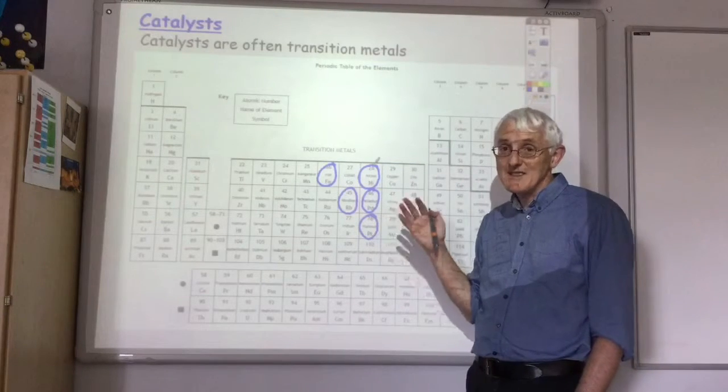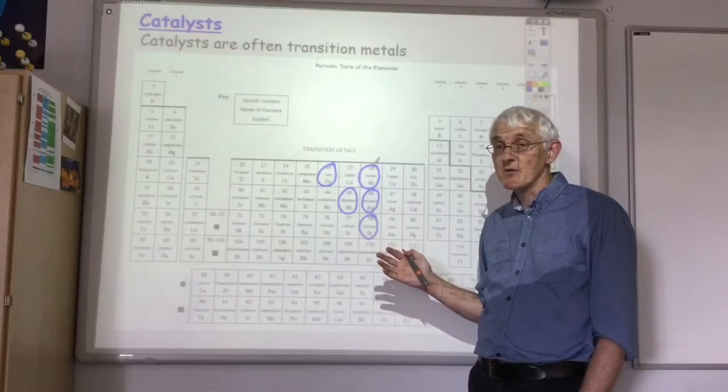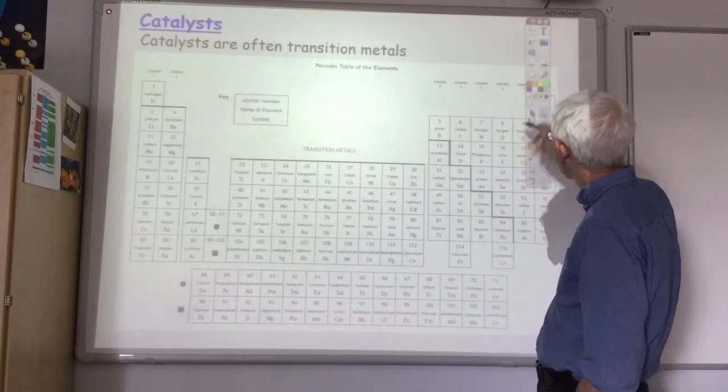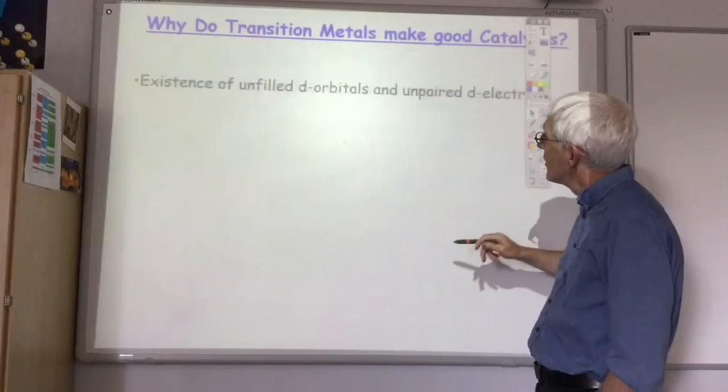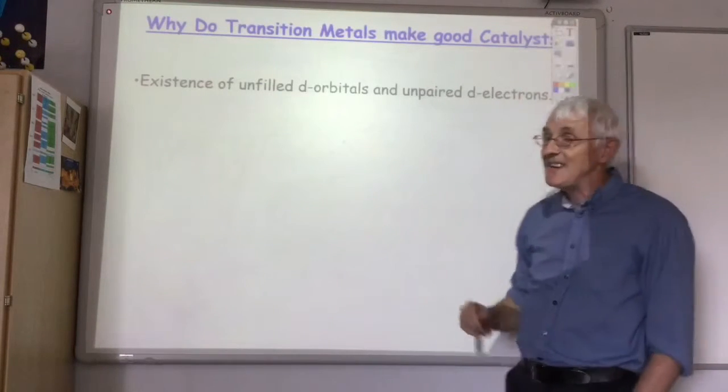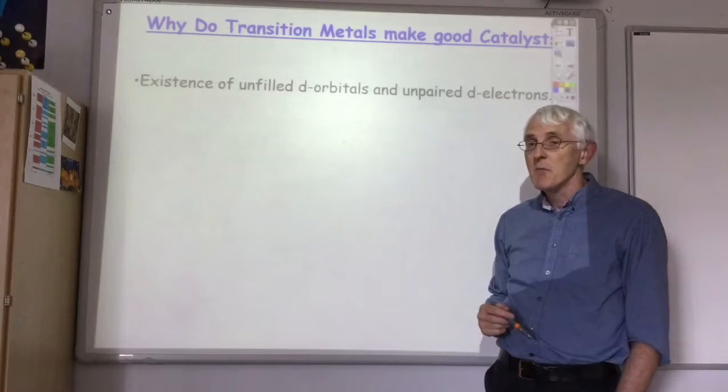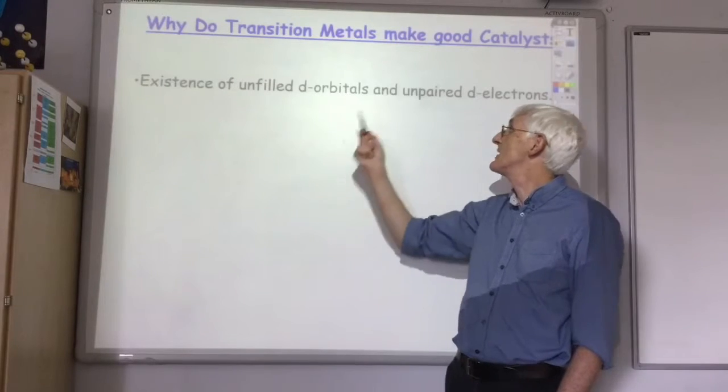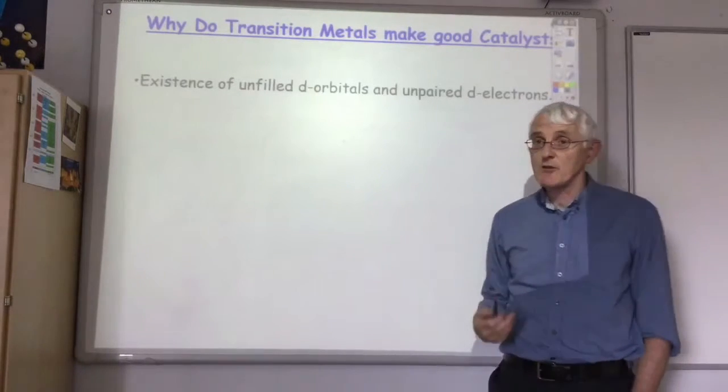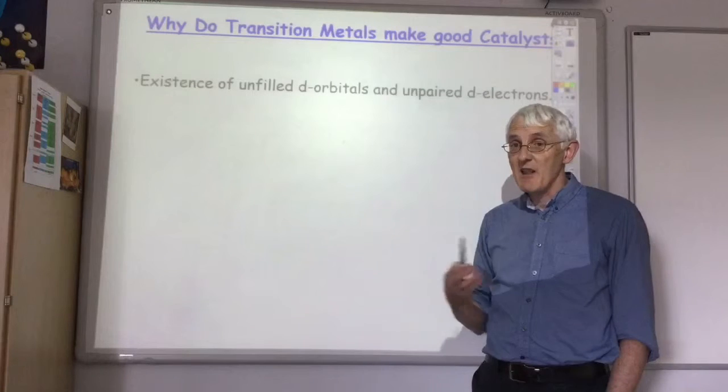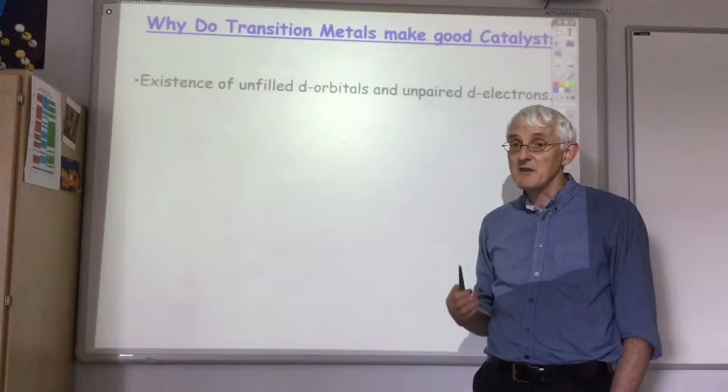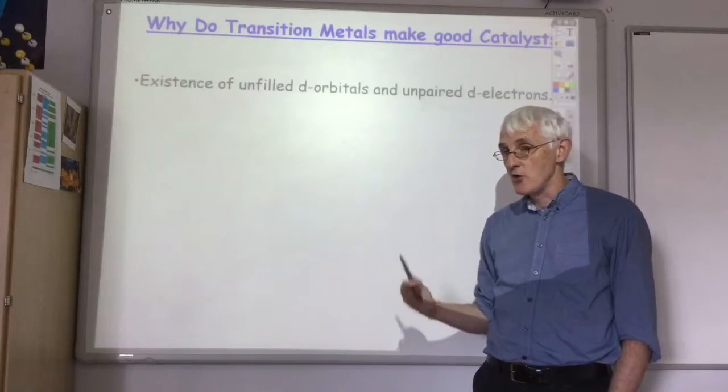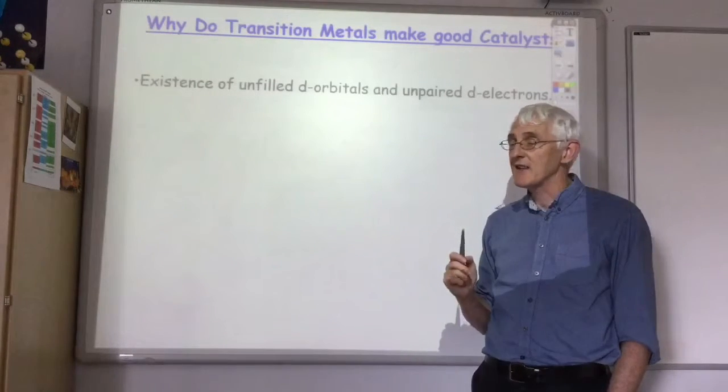What is it about transition metals that make them so suitable for use as catalysts? You're not going to get a very detailed answer to that question, but what's thought to be important is the existence of unfilled D orbitals and unpaired D electrons in the transition metal. This allows them to form alternative complexes, providing a different pathway from the reactants to the products with a lower activation energy.